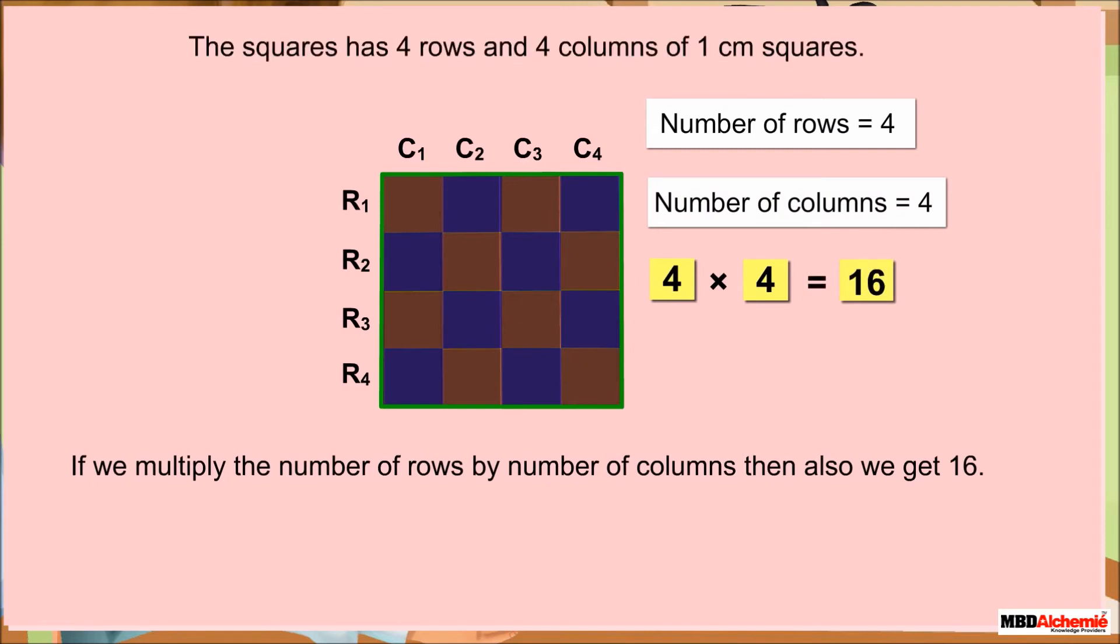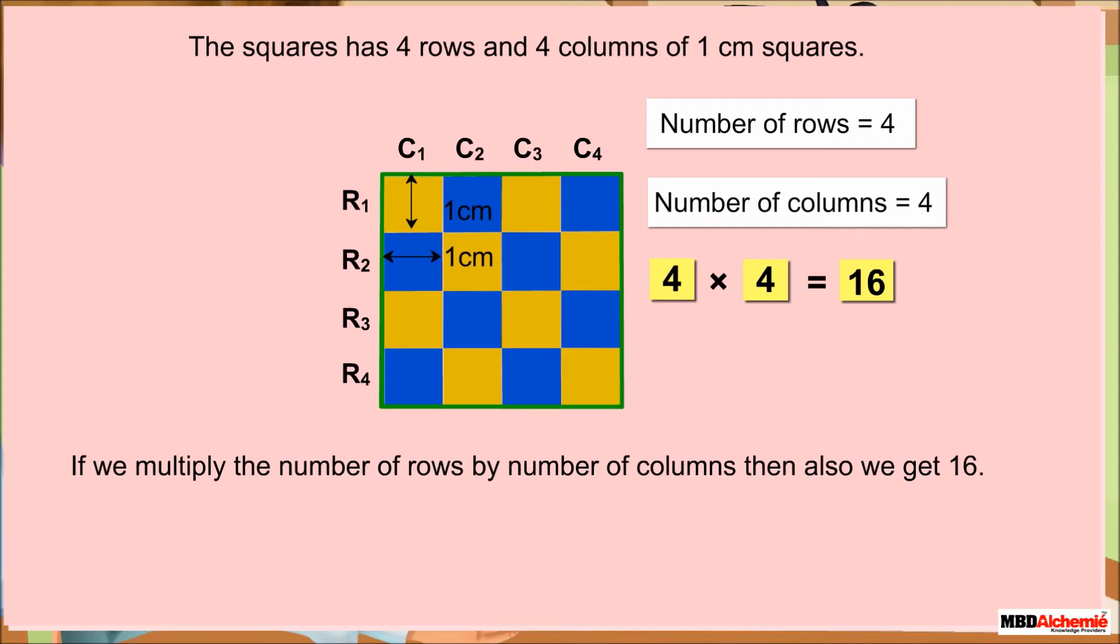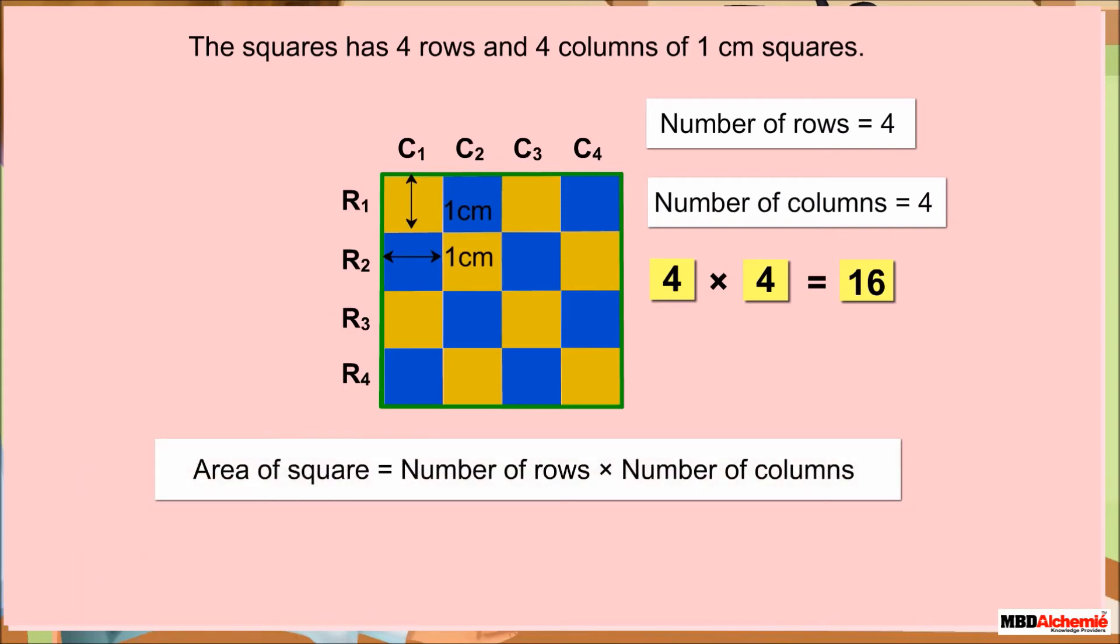The square has 4 rows and 4 columns of 1 centimeter squares. Therefore, the area of square is equal to the number of rows into the number of columns.